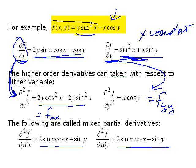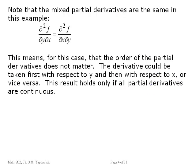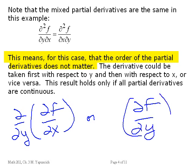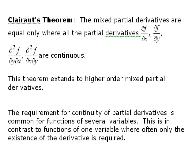It doesn't always happen that you get the same results. When the mixed partials are the same, it means the order in which you took the partial derivative did not matter — you could take the derivative with respect to x first and then y, or y first and then x. This holds only if all the partial derivatives are continuous. This is Clairaut's theorem: the mixed partial derivatives are equal only when all partial derivatives — the first with respect to x, the first with respect to y, and all of them — are continuous.